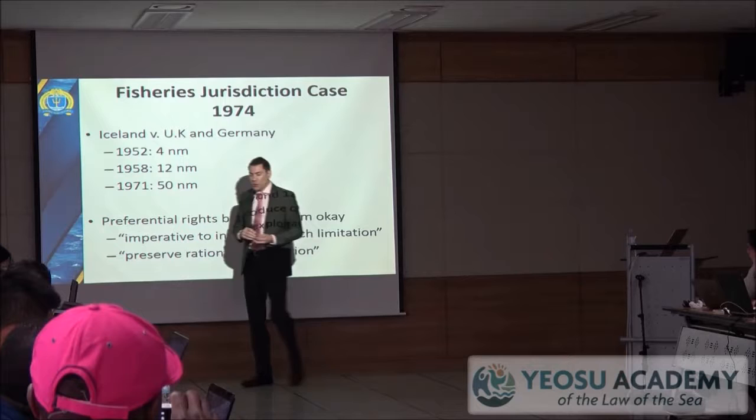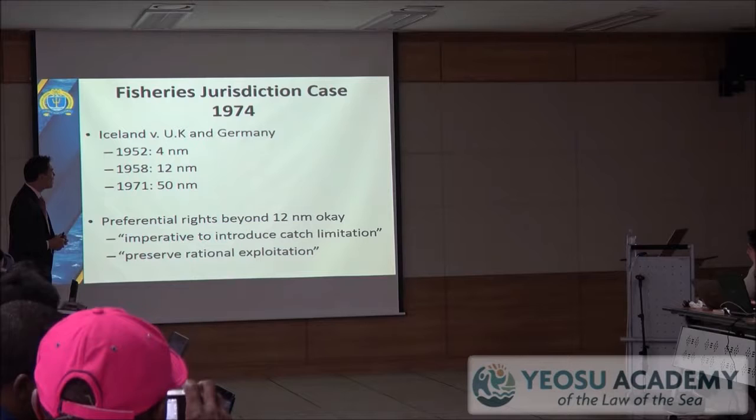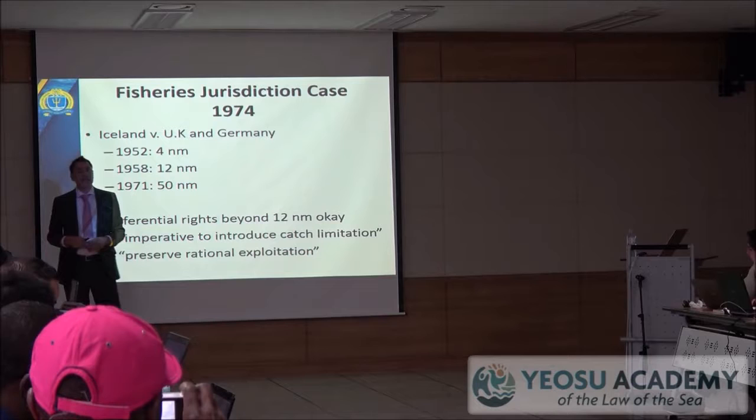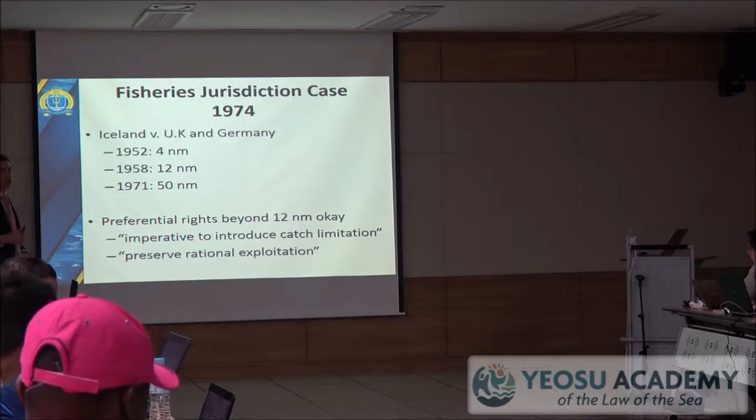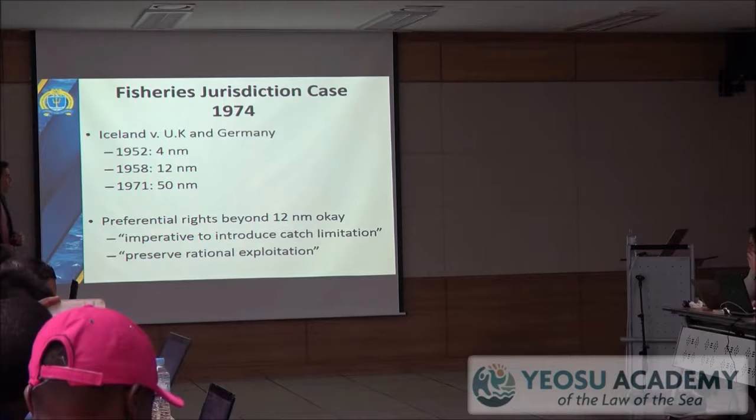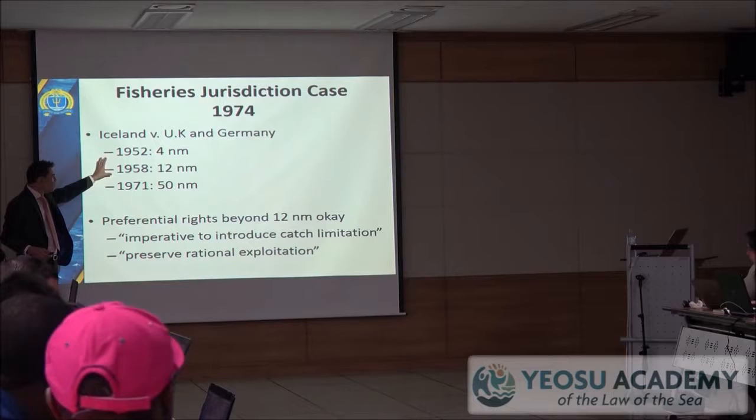This caused great disagreement between Iceland and some European countries, particularly the United Kingdom and Germany. Iceland declared in 1952 a 4-nautical-mile territorial sea, then in 1958 a 12-nautical-mile territorial sea, and in 1971 a 50-nautical-mile zone. This created what is referred to as the Cod War — named after the fish — a very rich cod fishery in that area.